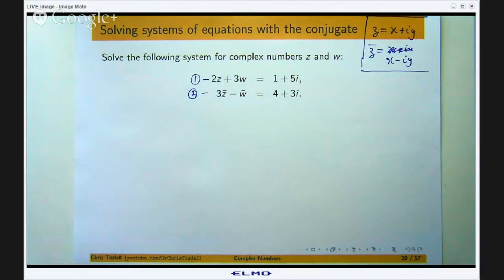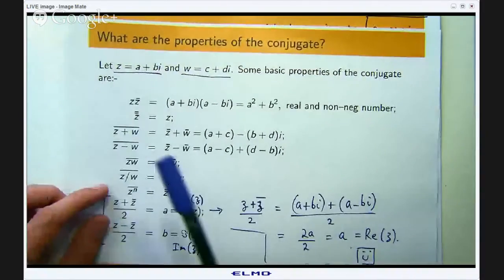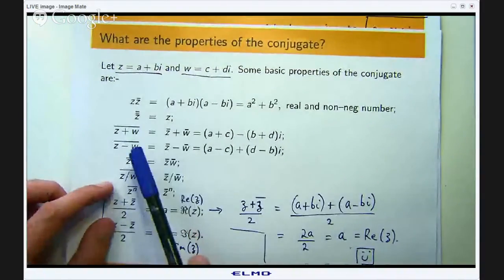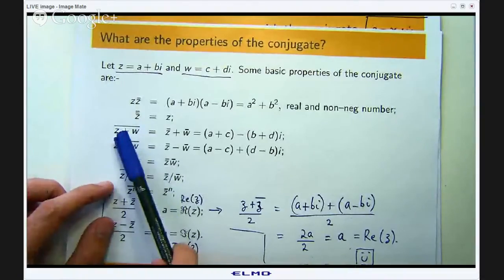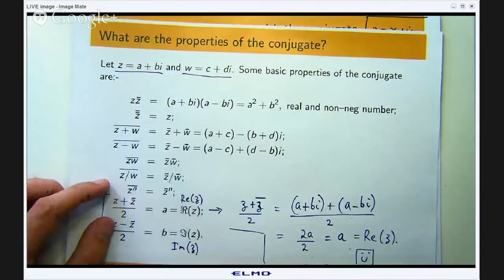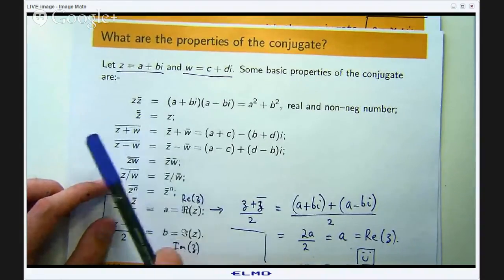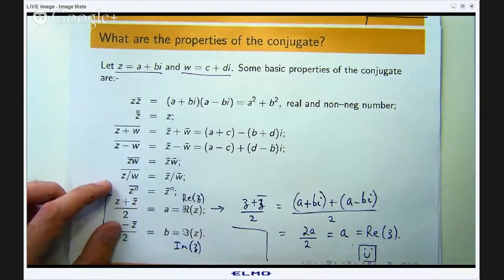Now how do we actually solve this problem? Well we can use the properties of the conjugate and in particular these two properties here. The conjugate of a sum is the sum of the conjugates and same for a difference and also the conjugate of a conjugate is just the original complex number.